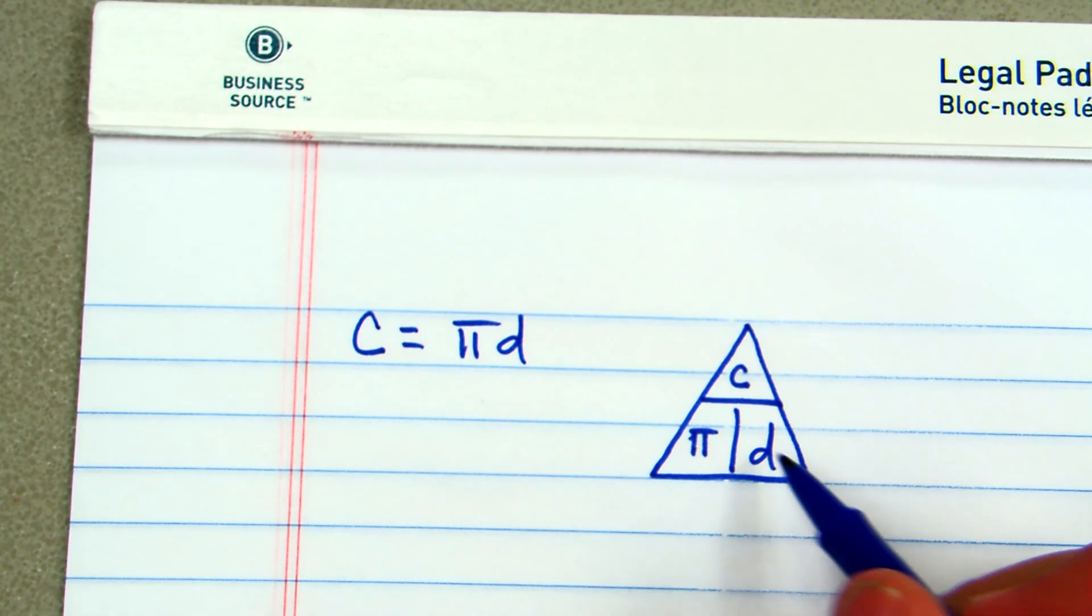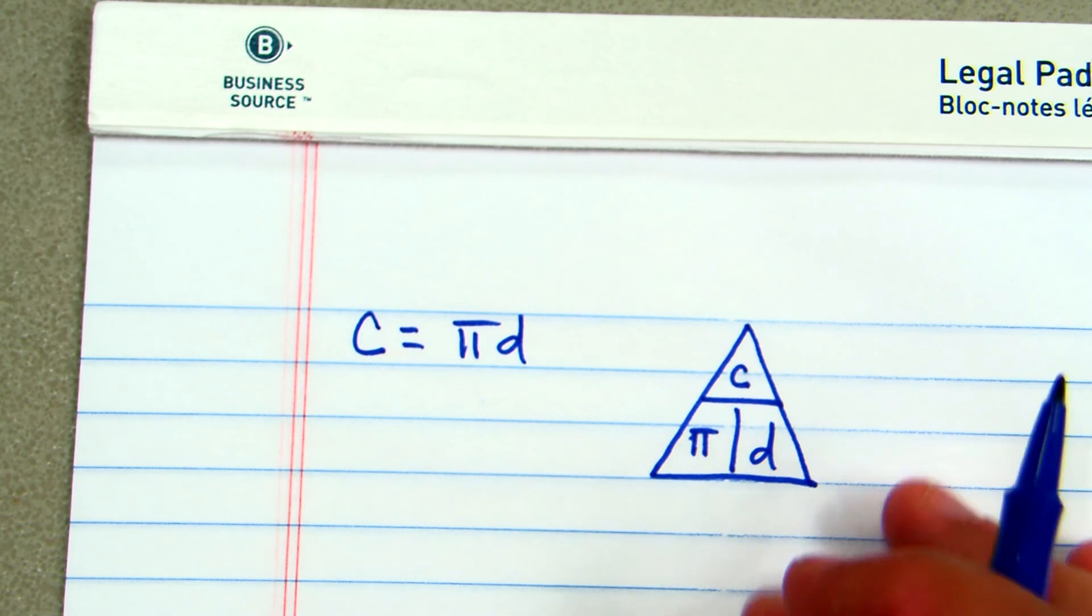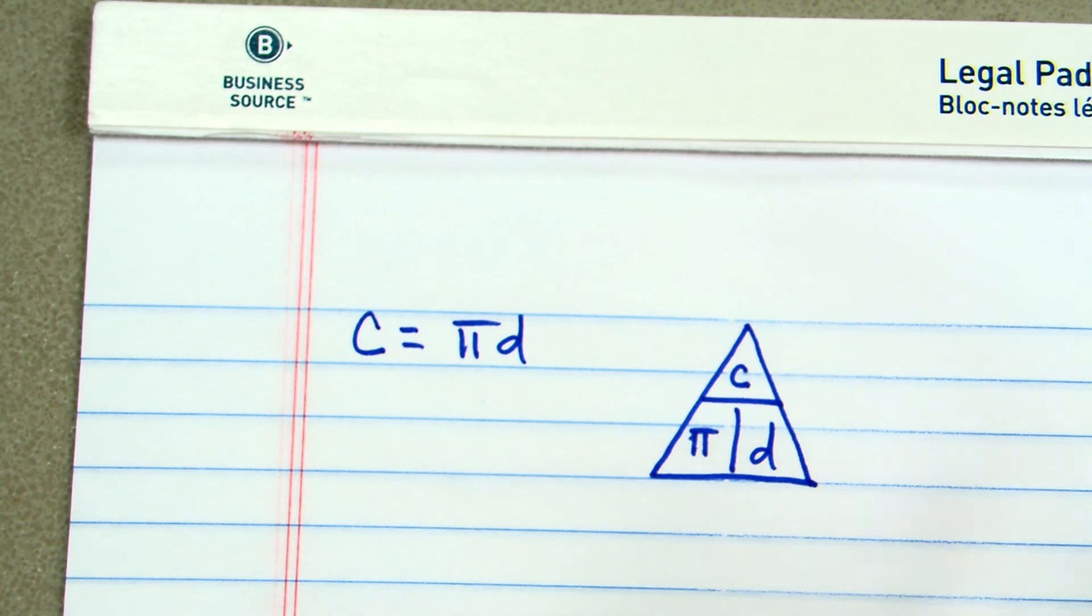And we also know that what happens if they have radius. Well, radius is half of the diameter. So that's something to know. In order to convert radius to diameter, you multiply by 2. In order to convert diameter to radius, you divide by 2.